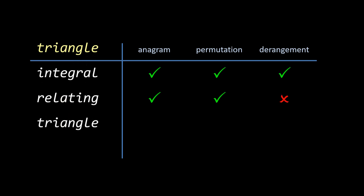The original word triangle doesn't count as an anagram, but it's still a permutation, even a special one called the identity permutation, where the order is left unchanged, which makes it the complete opposite of a derangement.